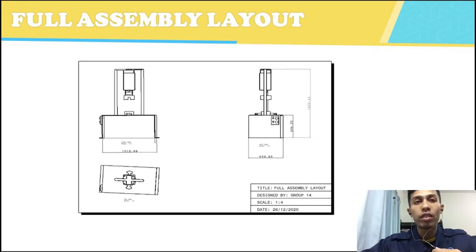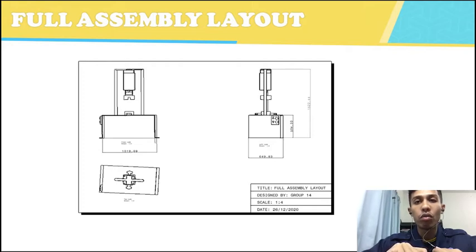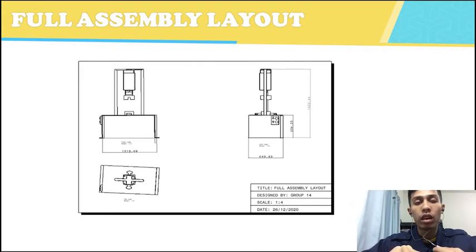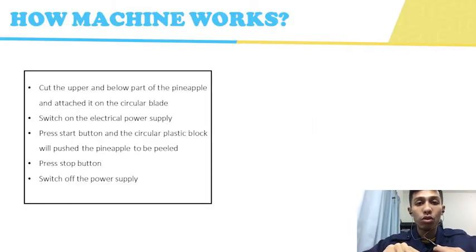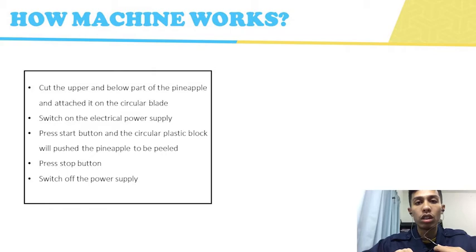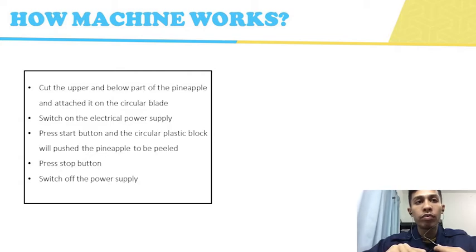Next is our full assembly layout. We made a drawing using a scale of 1 cm to 4 m. The upper right side is the side view of our product, and the upper left side is the front view. To use our machine, firstly you need to cut the upper part and the lower part of the pineapple and make it cylindrical. Then you attach it on the circular blade and switch on the main power supply. Next, press the start button to push the pineapple, then press the stop button and switch off the power supply.